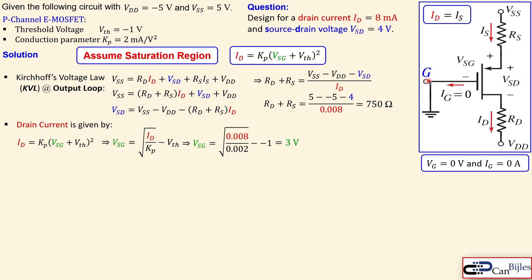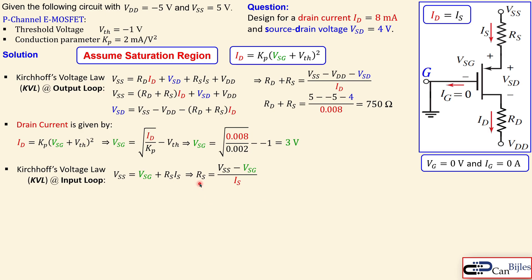The gate is directly connected to ground, so VG = 0 and gate current is zero. Applying KVL around the input loop: VSS = VSG + RS·IS. Solving for RS: RS = (VSS − VSG) / ID = (5 − 3) / 0.008 = 250 ohms.